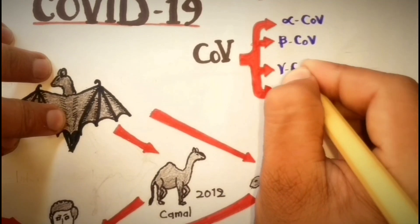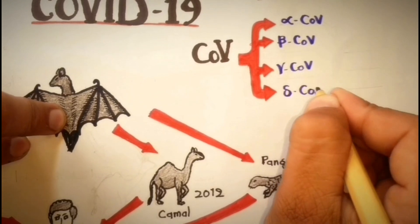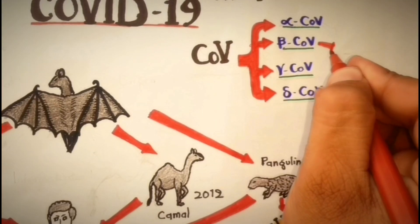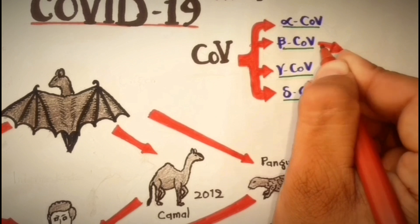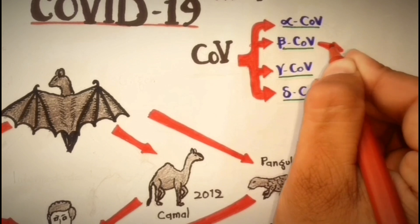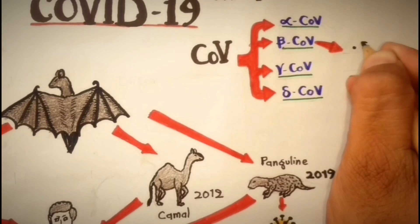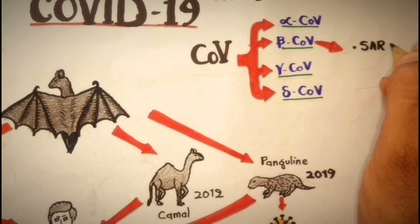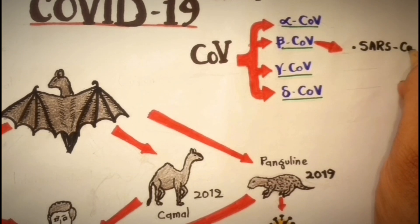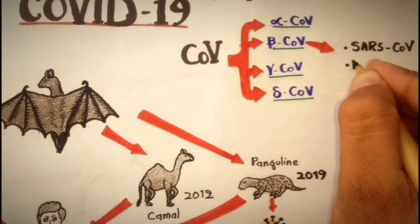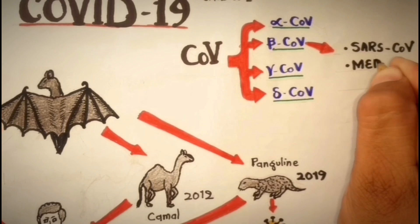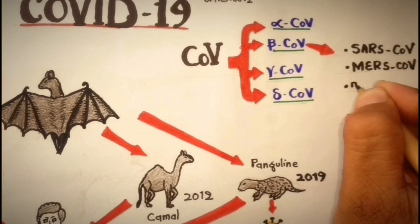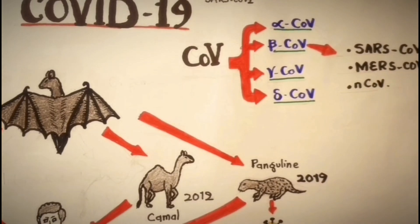Coronaviruses are divided into four sub-families: alpha coronaviruses, beta coronaviruses, gamma coronaviruses, and delta coronaviruses. Human coronavirus infections are caused by alpha and beta coronaviruses. SARS-CoV-2 and MERS-CoV are members of beta coronaviruses, and due to the close identity of the novel coronavirus with SARS-CoV-2, it is also included in beta coronaviruses.